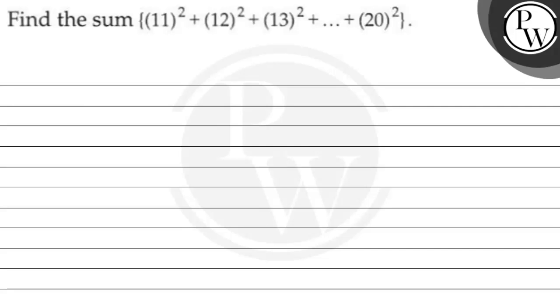Hello, Bacho. Let us read this question. The question says, find the sum of 11 square plus 12 square plus 13 square plus dot dot up to 20 square.